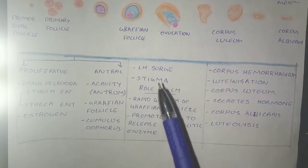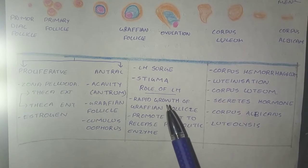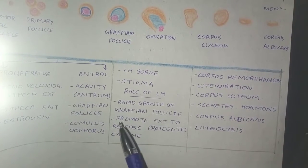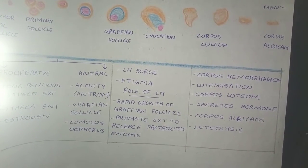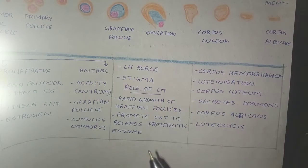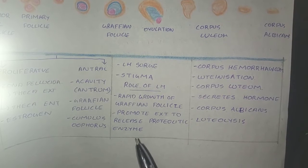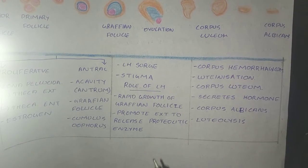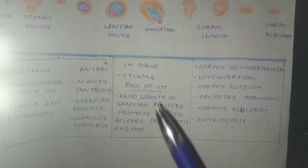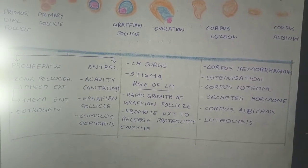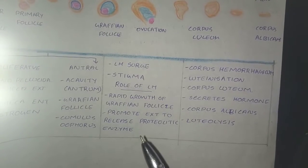Now for the role of LH in ovulation: it causes the rapid growth of Graafian follicle and it promotes the theca interna to release the proteolytic enzyme which causes the ovulation to occur. So LH is known as the hormone of ovulation.